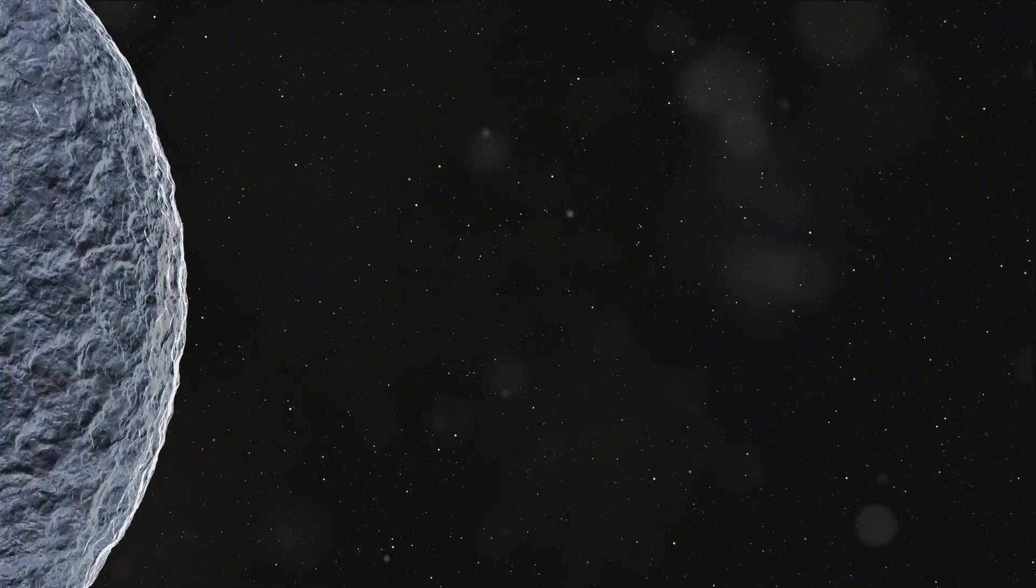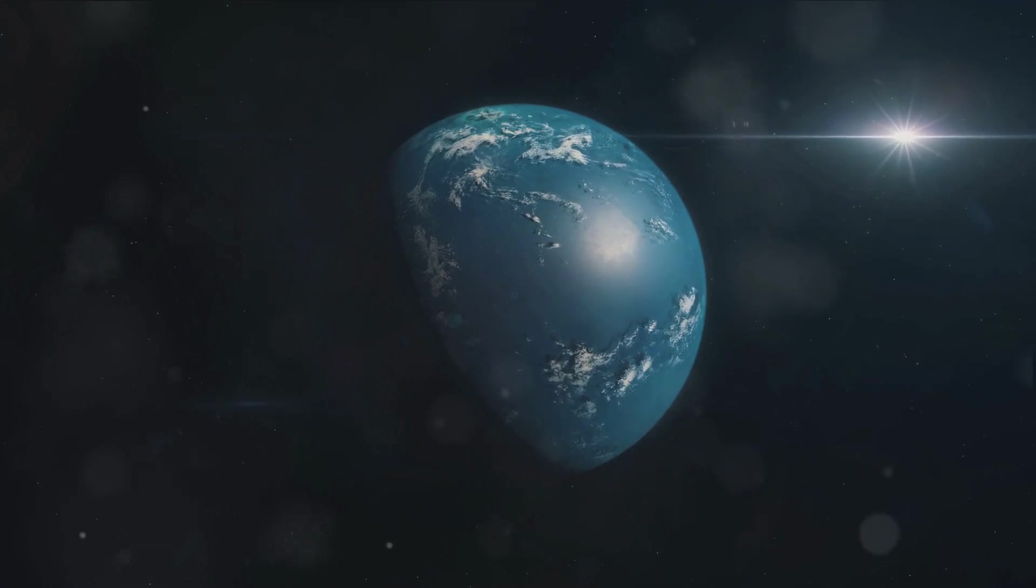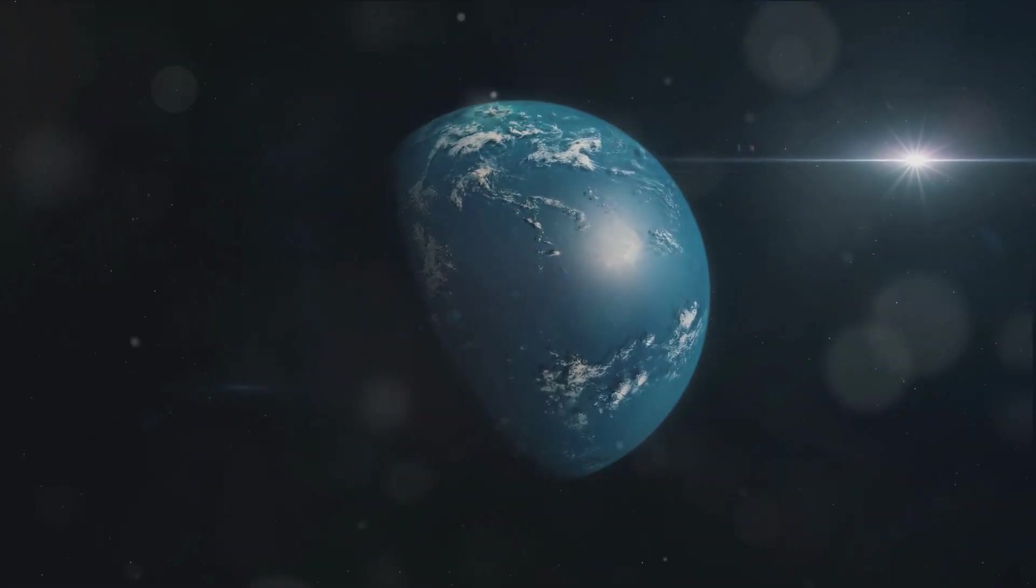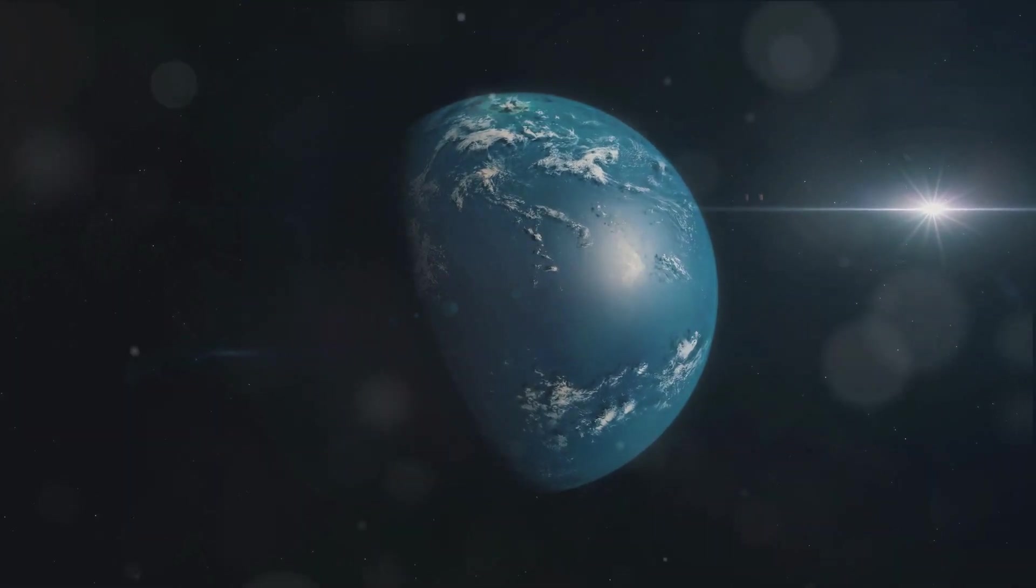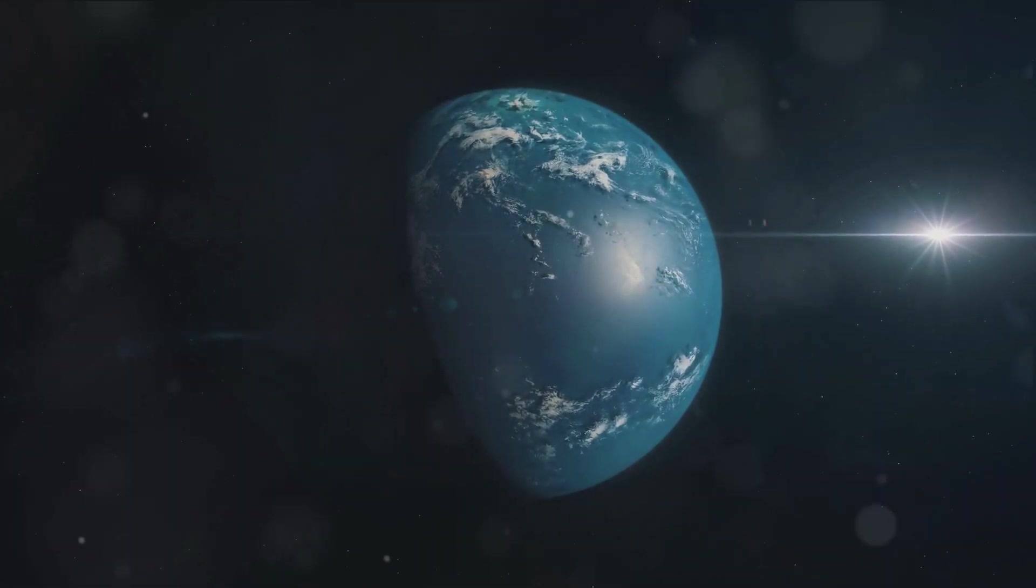Lastly, we have Kepler 385d. Now, this one is a bit of an oddball. It's slightly smaller than Earth, with a radius of about 0.9 Earth radii. It has an orbit period of nearly 10 days. Unlike its siblings, 385d is thought to be in the system's habitable zone. That's right, it's in the Goldilocks zone, where conditions might be just right for liquid water to exist. It's a tantalizing hint that perhaps, just perhaps, this world could harbor life.